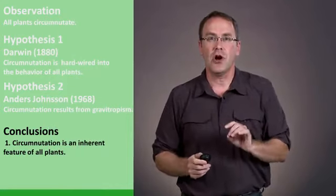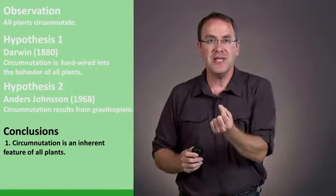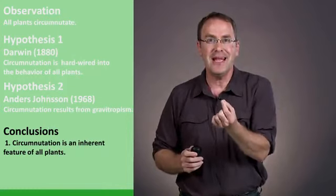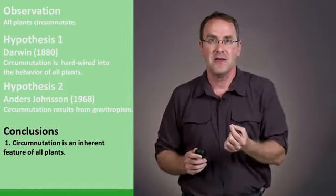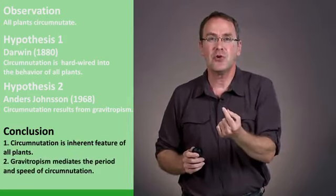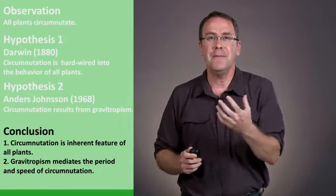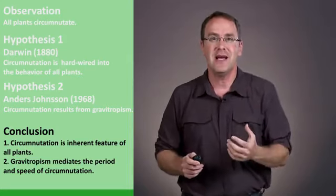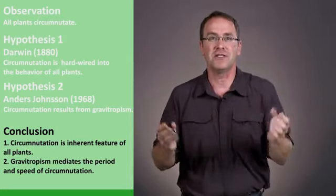So on the one hand, Darwin was correct. Circumnutation appears to be an inherent feature of all plants. Where was Johansson correct? He was correct that gravitropism then mediates the period or increases how fast and how far it's going.